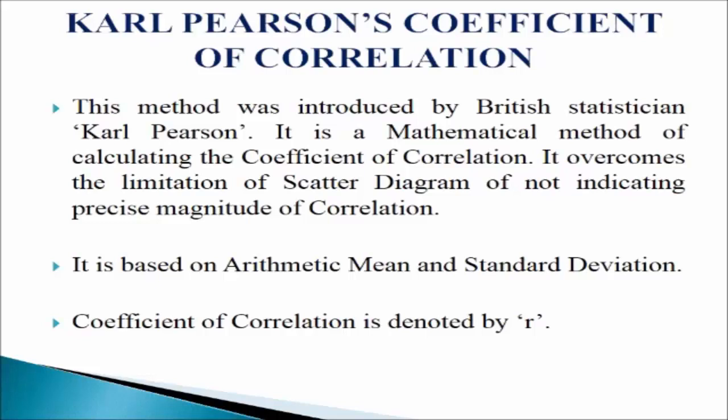According to Karl Pearson, the coefficient of correlation is determined by dividing the sum of products of deviations from their respective means by their number of pairs and their standard deviations.